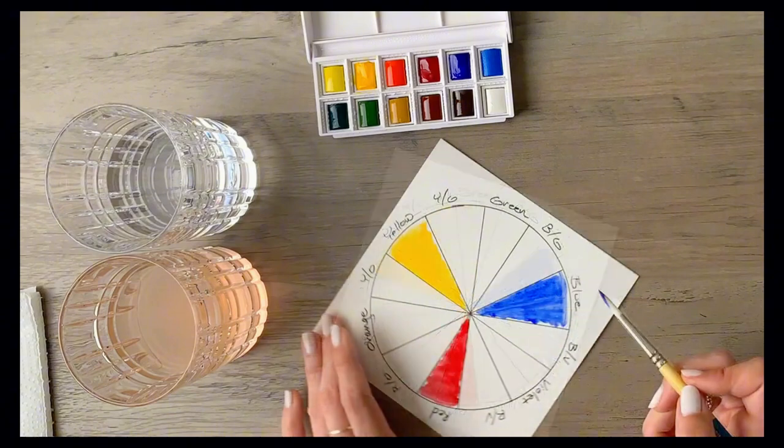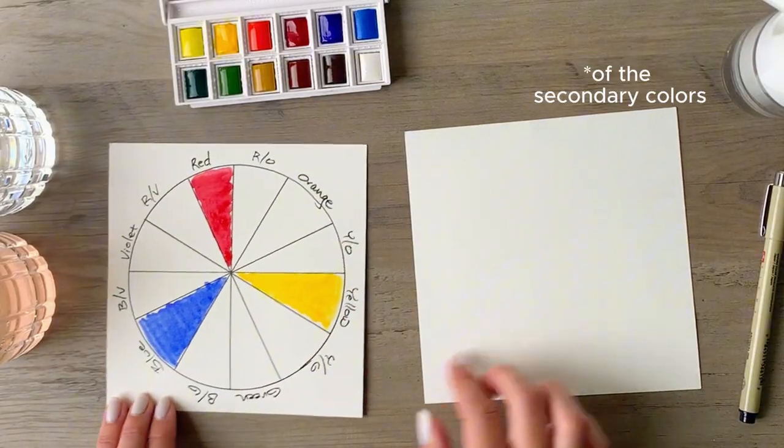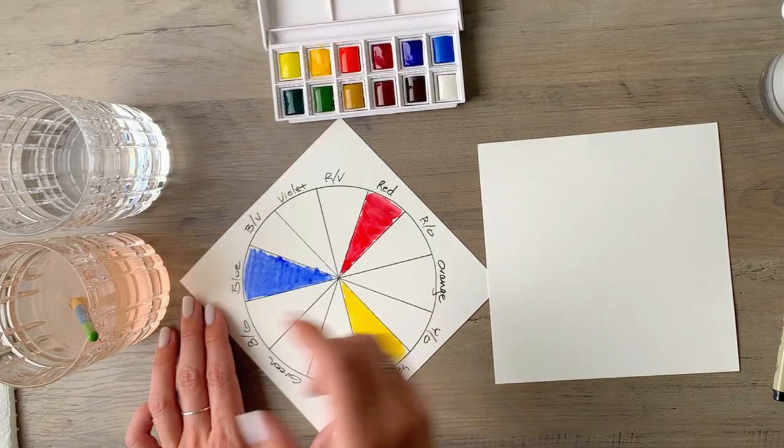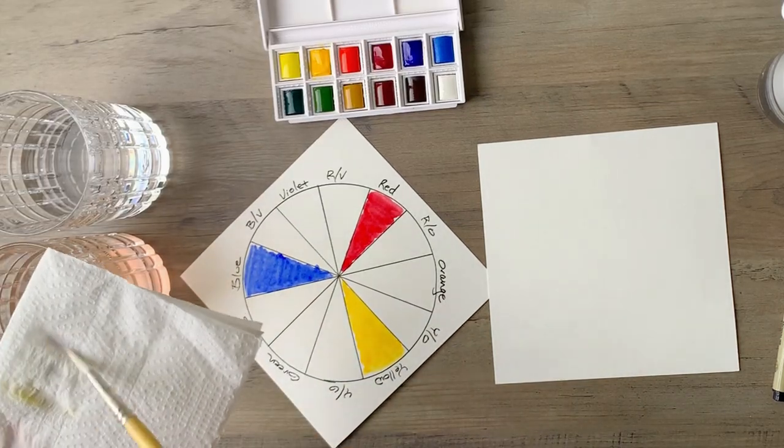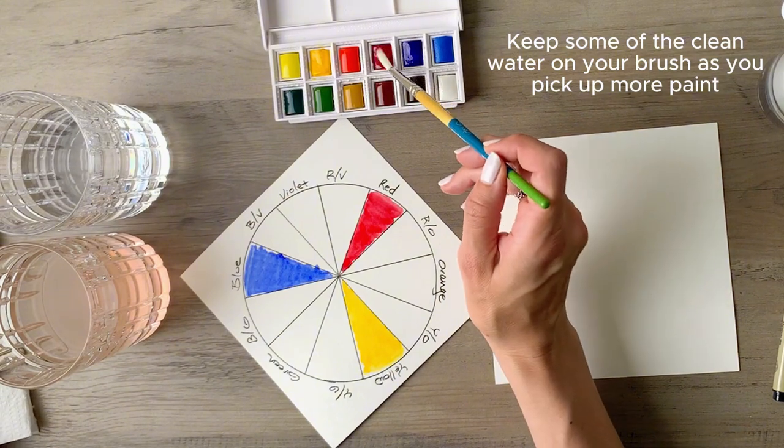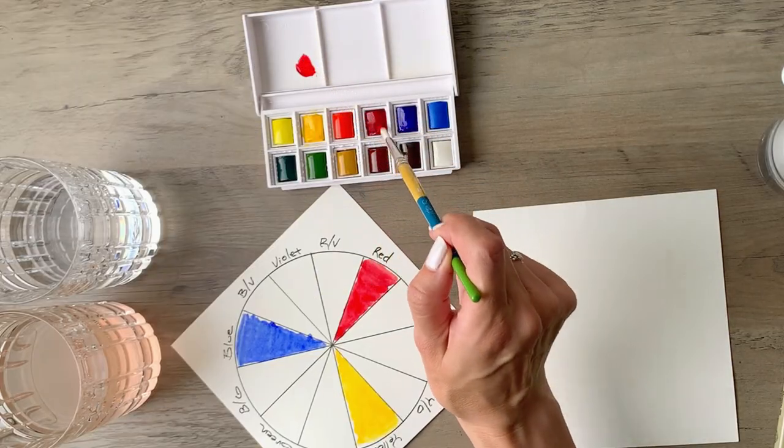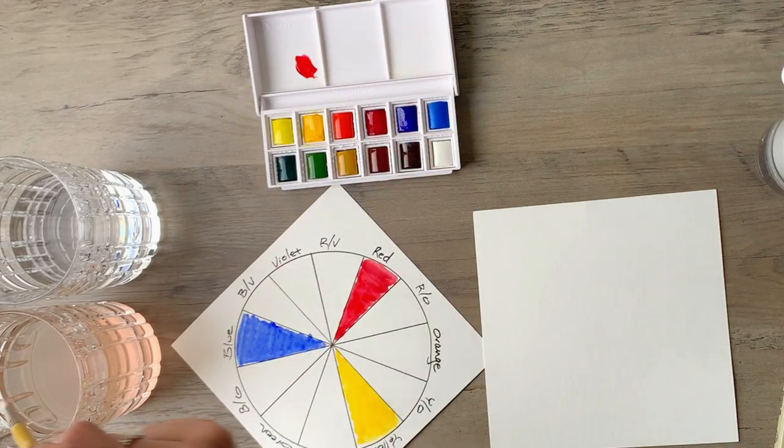So now we're going to get into the actual mixing and we're going to start off with mixing the red and the yellow. That's going to make a really beautiful orange. So clean off your brush and then you'll dip your brush into the red and place some of that in one of the mixing wells. Or if you've got a separate palette, you could use that as well.